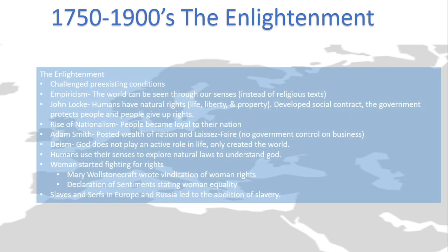So what was the Enlightenment? The Enlightenment was a period of time where people started to challenge the pre-existing conditions in society — asking why is he king, why am I in my social standards, why do I follow this religion, why does the world work this way. Empiricism is the idea that the world can be seen through our senses, and people started to believe this instead of learning about the world through religious texts — they would go out and explore, learn, and test.